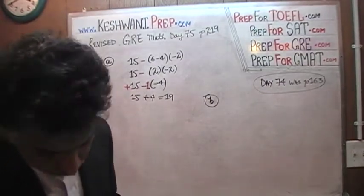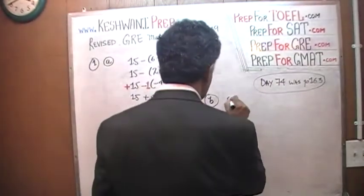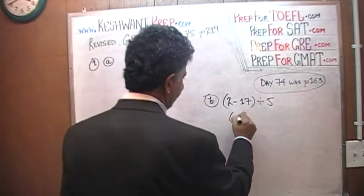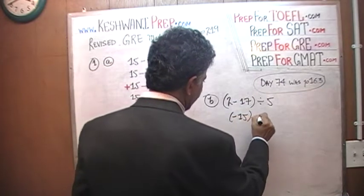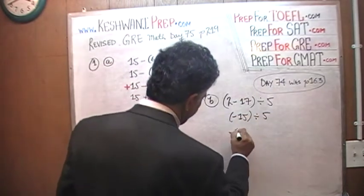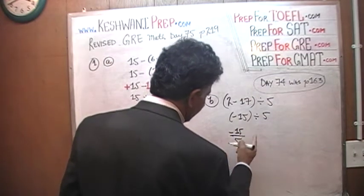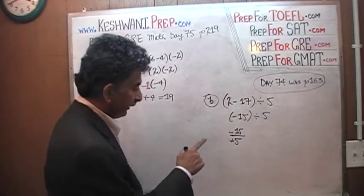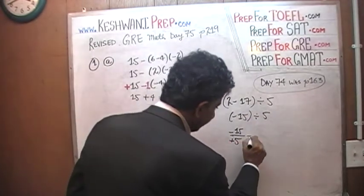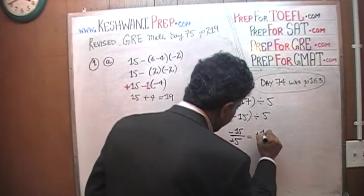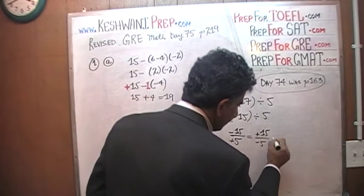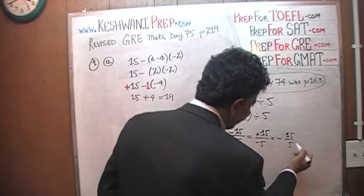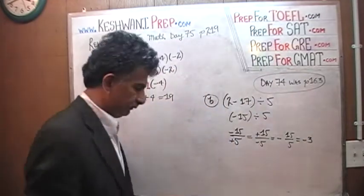B says 2 minus 17 divided by 5. 2 minus 17 is negative 15. Negative 15 divided by 5, which is negative 15 over 5. For those of you who need help in this area: negative 15 divided by positive 5 is the exact same thing as positive 15 divided by negative 5, which is the same as negative 15 divided by 5. And 15 divided by 5 is 3, so the answer is negative 3.